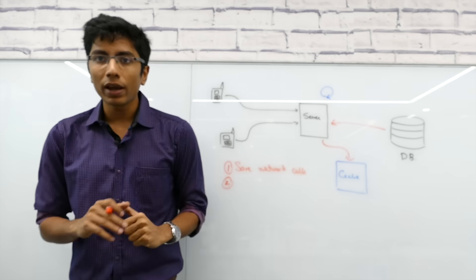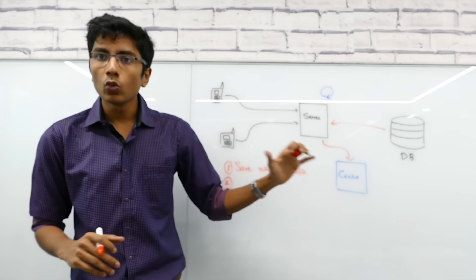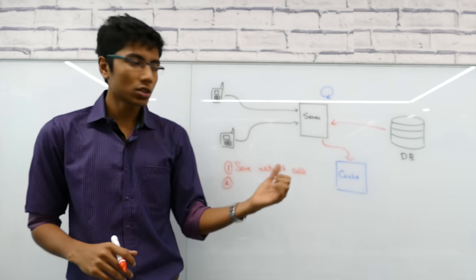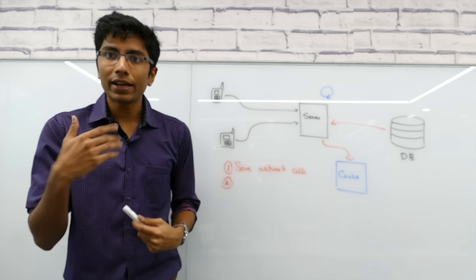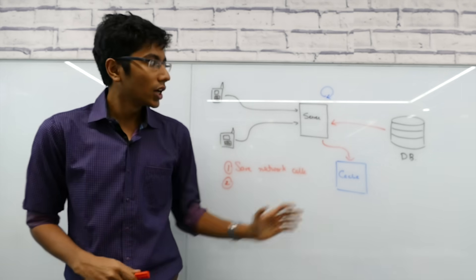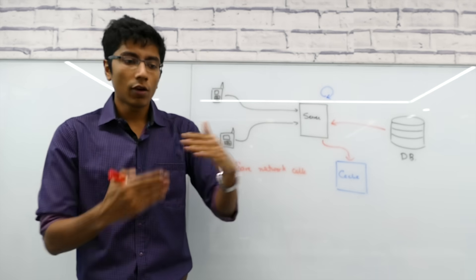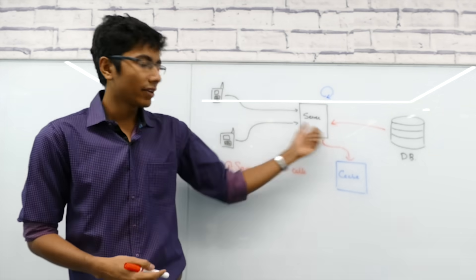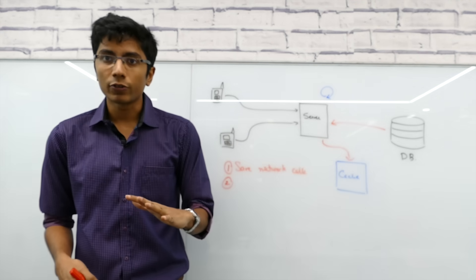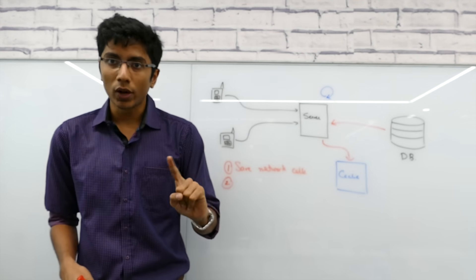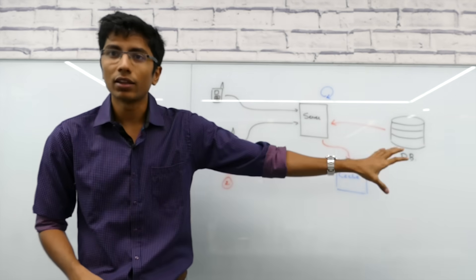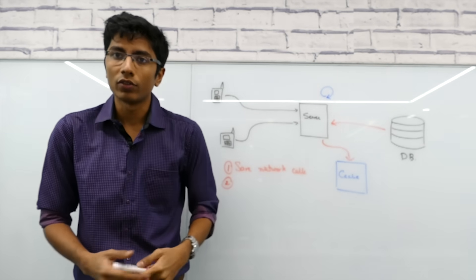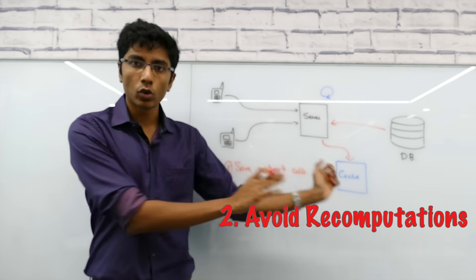The second use case is when you want to be avoiding computations. For example, you want to find the average of all users, the average age of all users that you have in your system. In this case one of the ways that you can do this is every time a person asks for the average age, you go to the database, get all the users, find the average of the age and then return that. Now this is very expensive of course so instead what you can do is you can do this once, find the average age and then store it in the cache. So that's a key and a value. So average and then 26, 28 whatever be the thing, it's a key value, store it in cache.